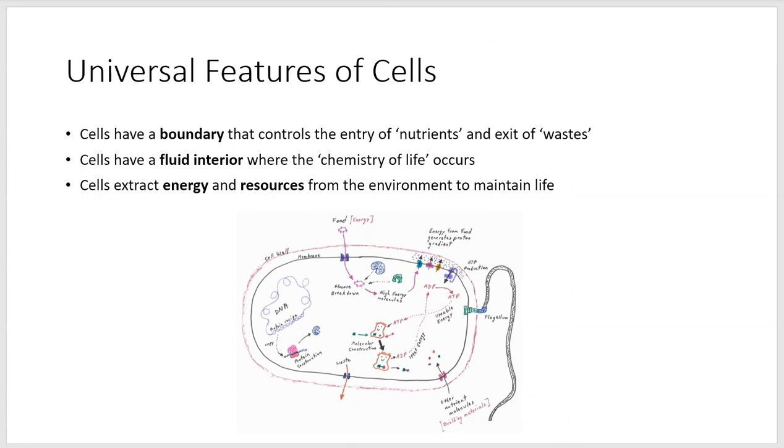So let's summarize the universal features of cells. Cells have a boundary that controls entry of nutrients, exit of waste. They have a fluid interior where the chemistry of life occurs, that's the cytoplasm. Cells extract energy and resources from the environment to maintain life. All cells are doing this, bacteria and complex cells.